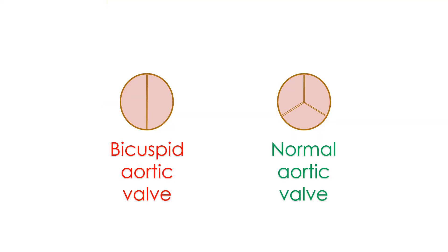Other associations of coarctation of aorta are bicuspid aortic valve, aortic stenosis, ventricular septal defect, and patent ductus arteriosus.